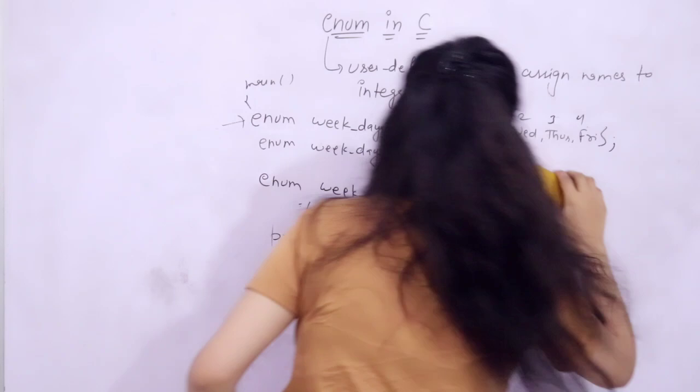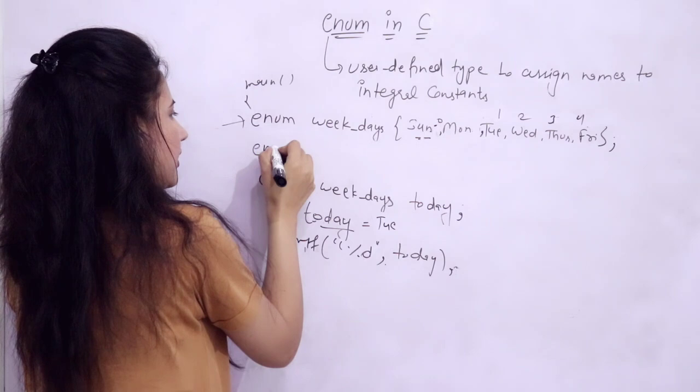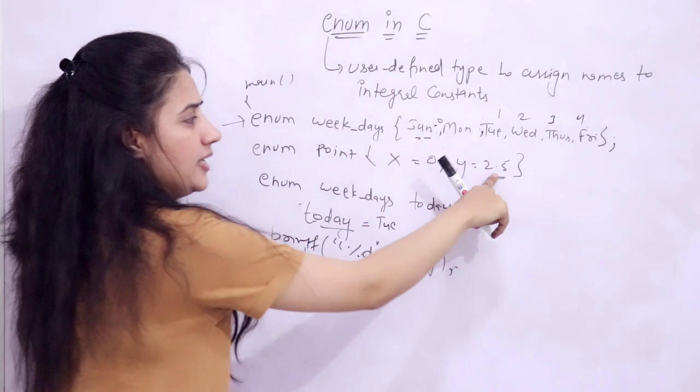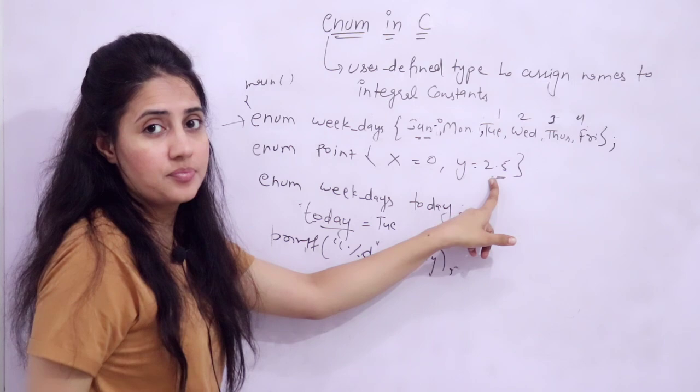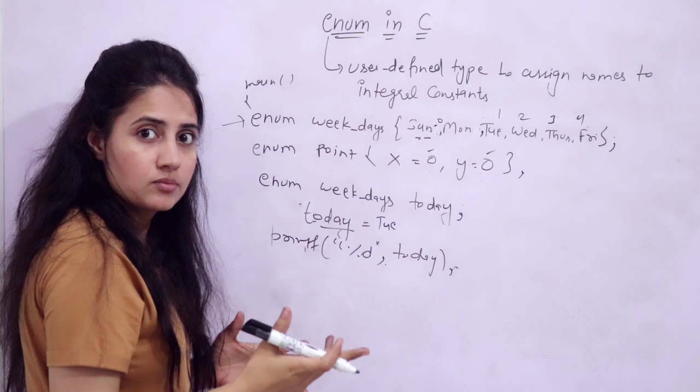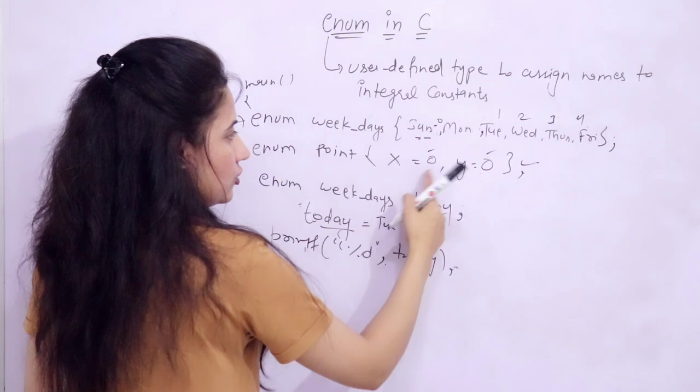Only integral values are allowed in enum. For example, if you write Y = 2.5, that's not allowed — only integer constants are permitted. However, two different enum names can have the same integer value; for instance, X = 0 and Y = 0 is perfectly fine. Same integral constants can be assigned to different names.